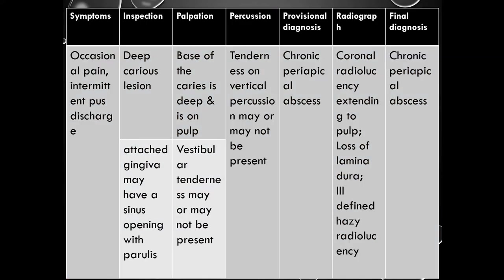Next: occasional pain and intermittent pus discharge are the patient's symptoms. On inspection, deep caries lesion; the attached gingiva may have a sinus opening with a parulis. On palpation, base of the caries is deep and on the pulp; vestibular tenderness may or may not be present. On percussion, tenderness on vertical percussion may or may not be present. Based on the finding of a sinus opening, the diagnosis is chronic periapical abscess. On radiograph, there will be loss of lamina dura and ill-defined hazy radiolucency at the periapex. Final diagnosis: chronic periapical abscess.